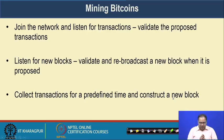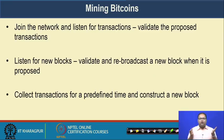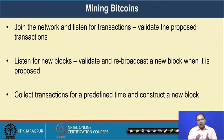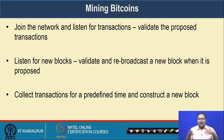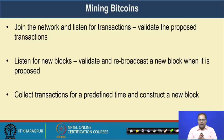Bitcoin mining has six different steps. The first step is: if you want to be a miner, you have to join the bitcoin network and listen for transactions, then validate the proposed transactions coming from the client. The next step is to listen for new blocks, validate those new blocks, and re-broadcast a new block when it is proposed — if you are getting a new block from a peer, you validate it and re-broadcast it. Then collect transactions for a predefined time and construct a new block with those transactions not already included in the blockchain.